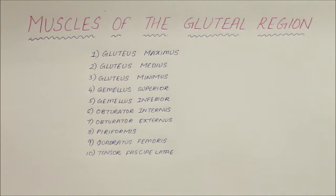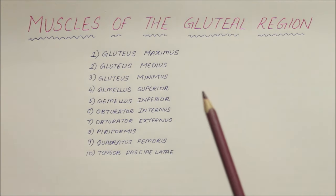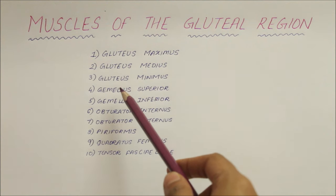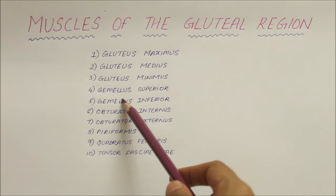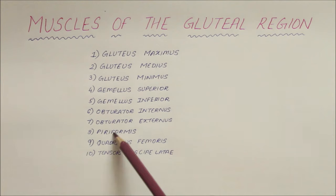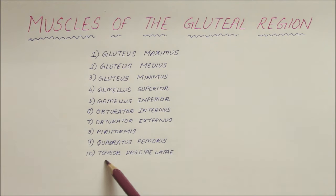Hello guys and welcome back to my channel. In this video, we will be learning about the muscles of the gluteal region. As an introduction, we have 10 muscles of the gluteal region: 3 gluteus muscles, 2 gemellus muscles, 2 obturator muscles, the piriformis, quadratus femoris, and the tensor fasciae latae.